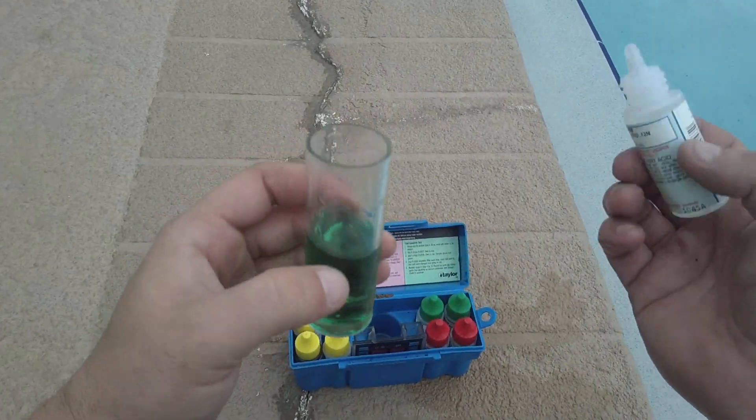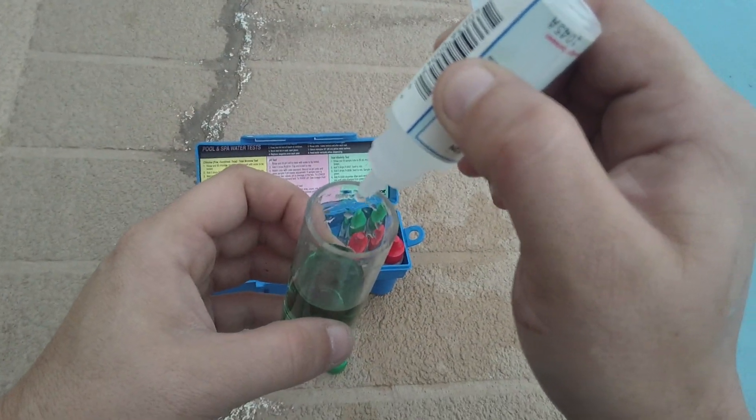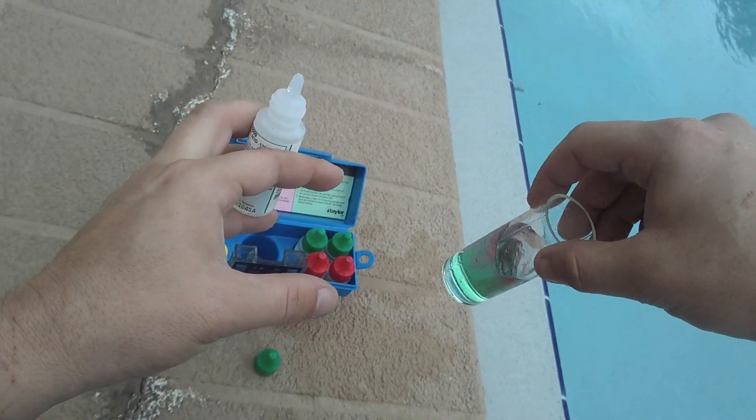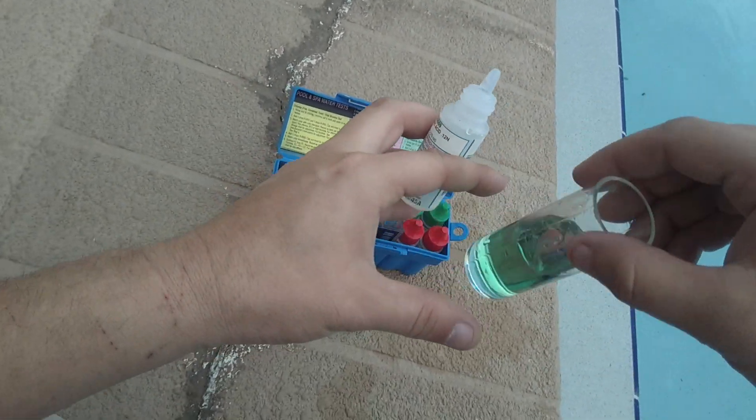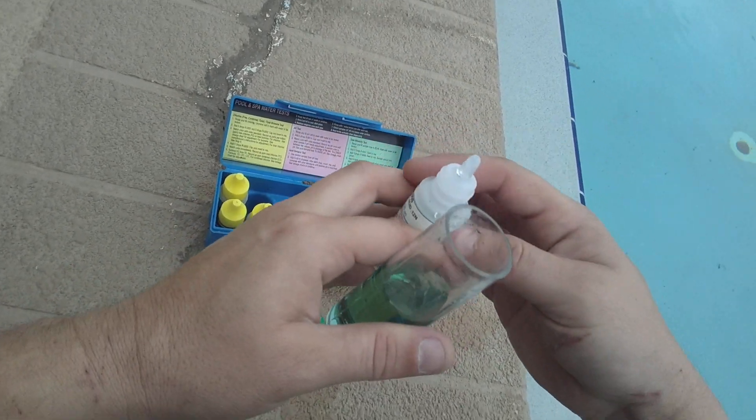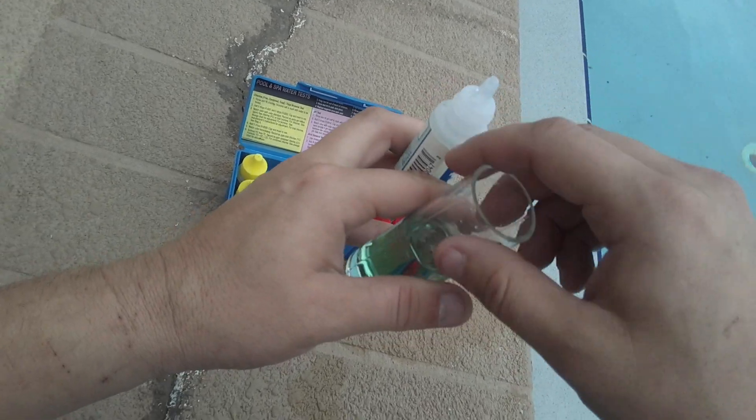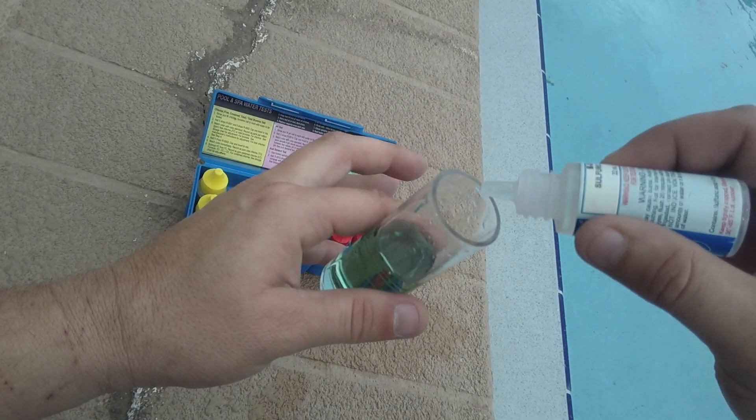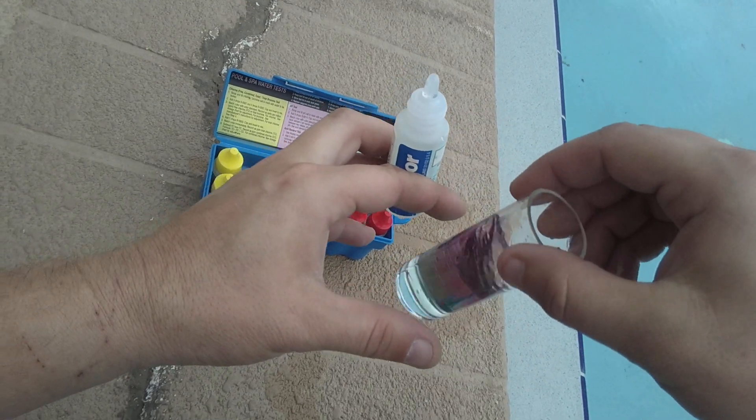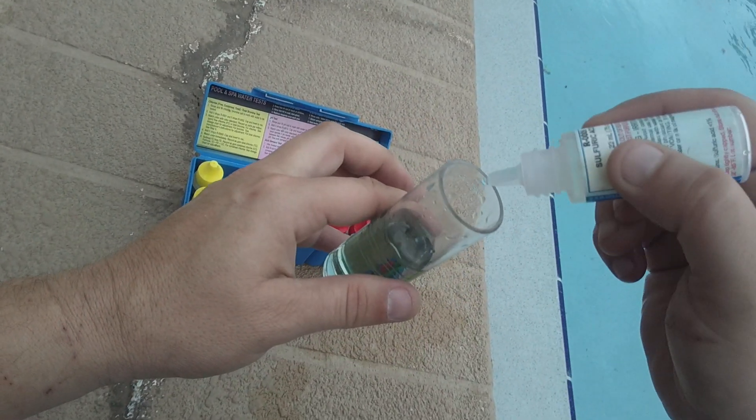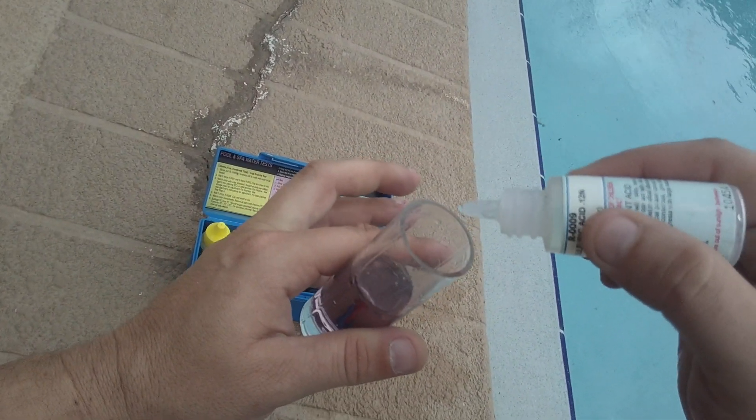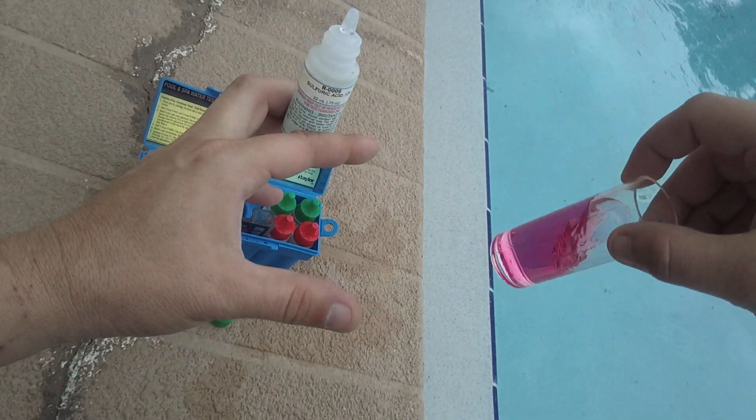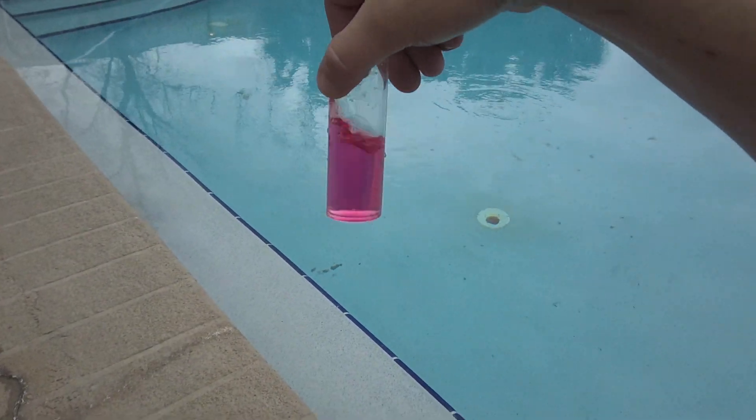One, two, three, four - I already know it's gonna take a little bit - five, six, seven, eight, nine. So now it turned red at nine drops. So you take nine times ten, that makes 90.